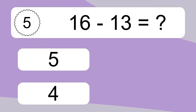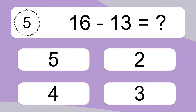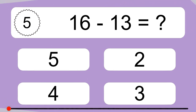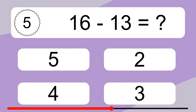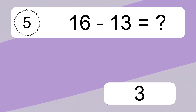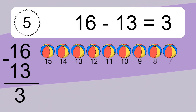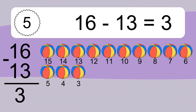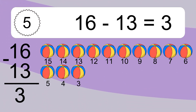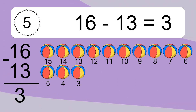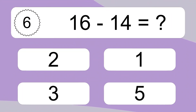16 minus 13 equals what? 16 minus 5 equals 2. Let's count it. 15, 14, 13, 12, 11, 10, 9, 8, 7, 6, 5, 4, 3.